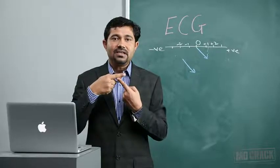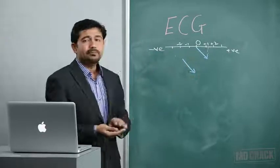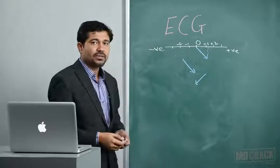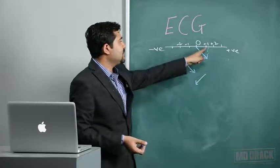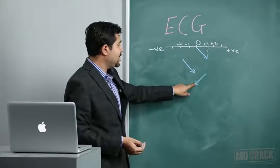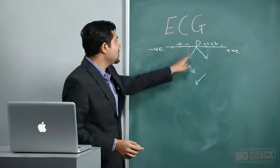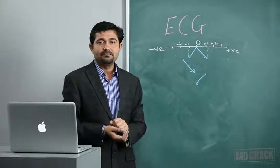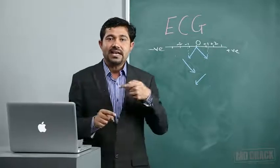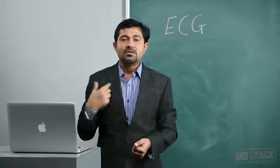The voltage recorded in a particular lead depends on the axis of the lead and the projection of the resultant vector onto it. Simple rule: if a vector is directed towards the positive electrode, a positive voltage is recorded; if the vector is directed towards the negative electrode, a negative voltage is recorded - for example, minus one millivolt.